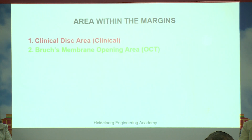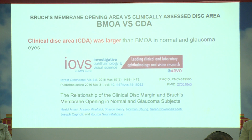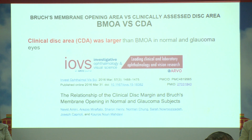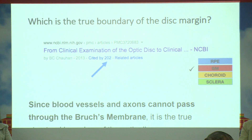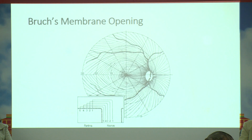We needed consensus on what is the real disc area or disc margin, since we had two areas for debate. The study by Chauhan et al. and others revealed that the clinical disc area — the one based on the sclera — is always larger than the Bruch's membrane opening area in both normal and glaucomatous eyes. Chauhan et al. concluded that the true boundary of the optic disc margin is the Bruch's membrane, because no blood vessels and axons can pass through it, putting the debate to rest.